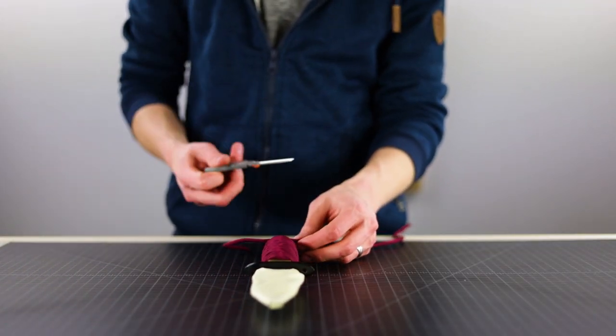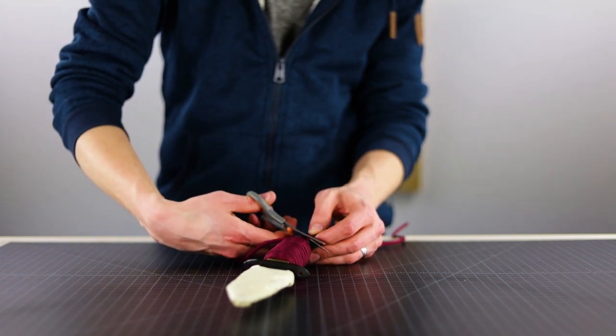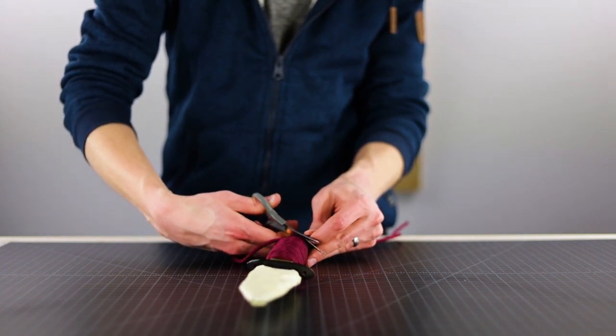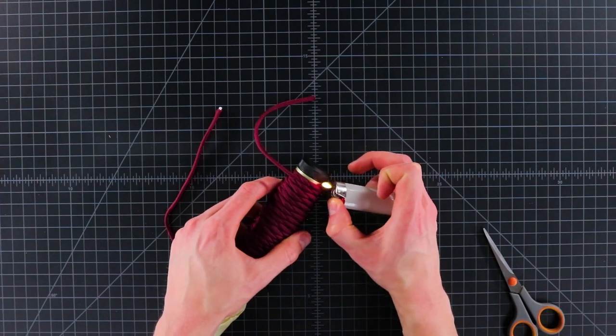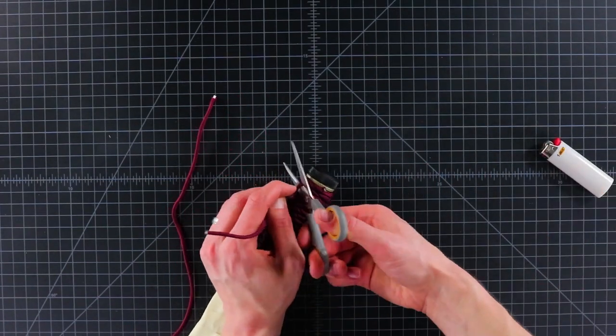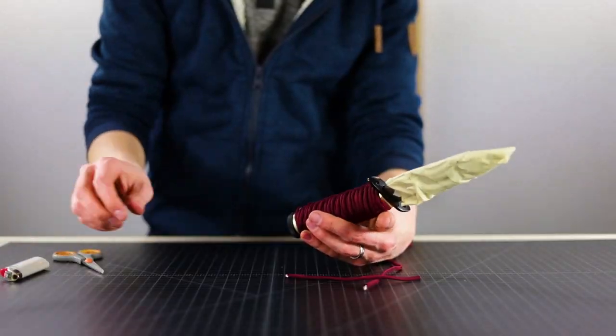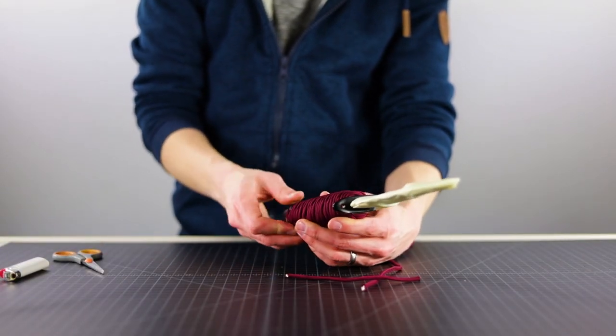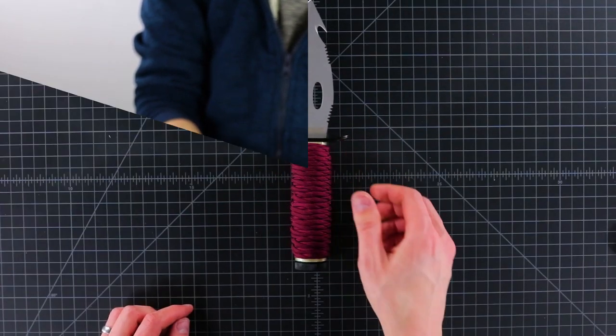Just grab the scissors, cut it about a quarter to an eighth of an inch away. Then if those are flattened, well they shouldn't slip around too much. And there's our finished handle wrap.